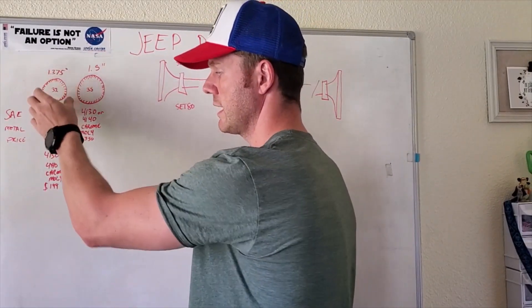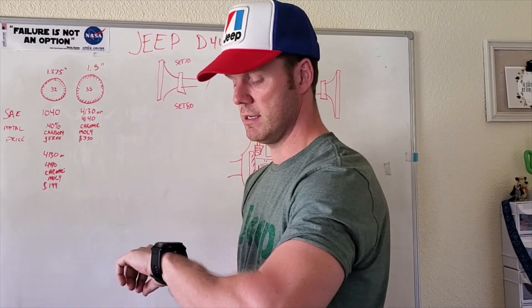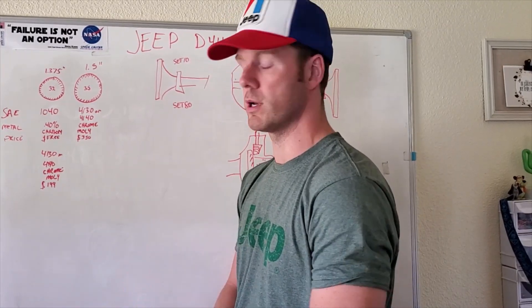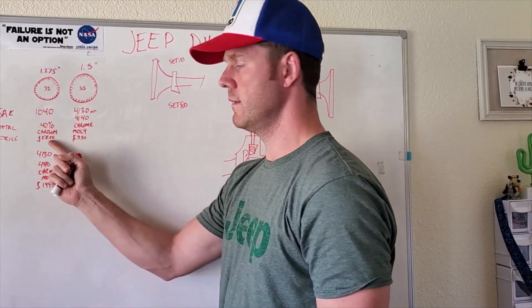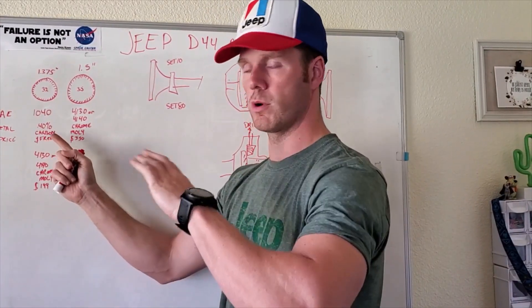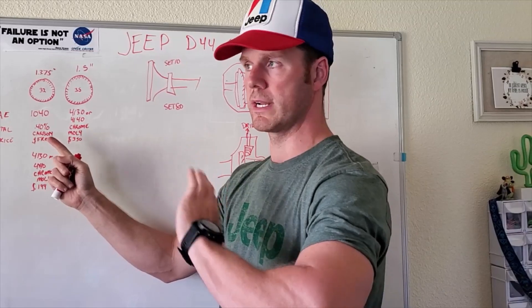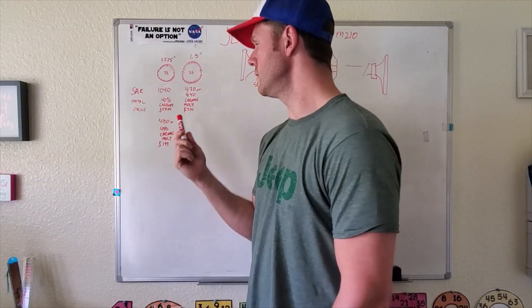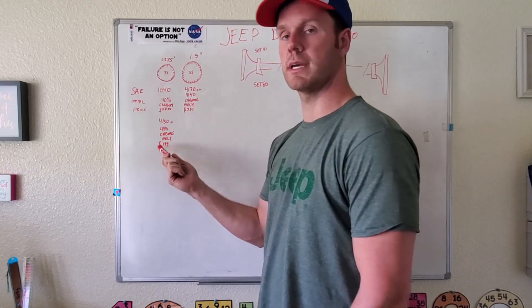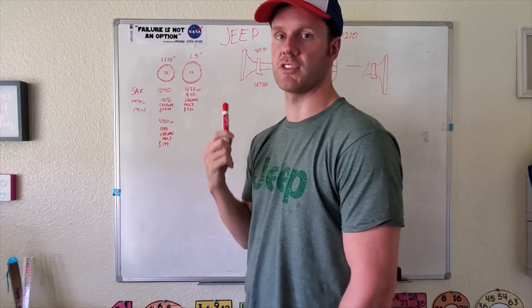This hasn't come out yet, right? We still haven't got a 35-spline shaft yet. So what I want to let you know right now, as of May 23rd of 2020, you can buy all of these. This comes with your truck, Sport S, Sport, Overland, whatever, Rubicon. They're all 32-spline, 1040 shafts. So going up to a chromoly or up to a 35-spline shaft just makes sense.